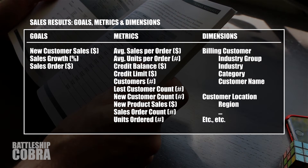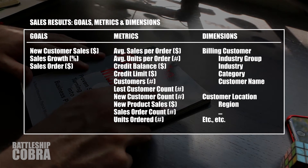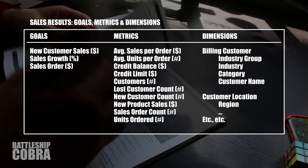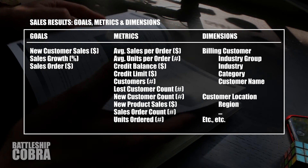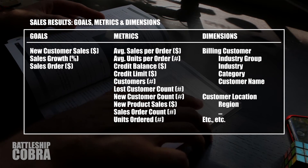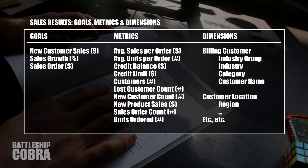Dimensions are how you allocate your resources. There are a ton of them — when you're just starting out or running a small business, you don't need to go crazy. You could start just at the dimension of the business overall, but the bigger you get, the more you'll want to divide and get specific. Dimensions include things like billing, customer, and industry group.